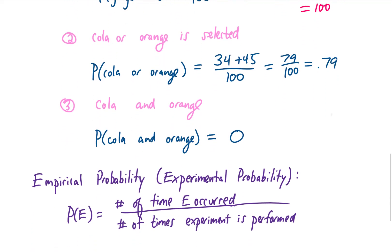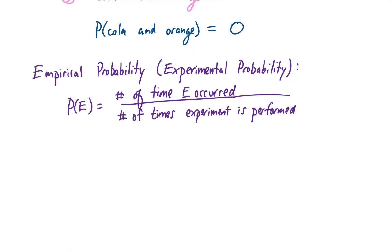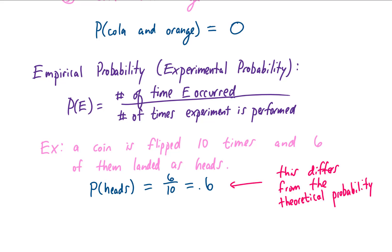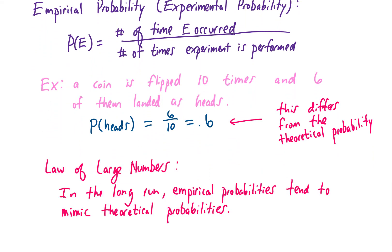Because we next want to talk about empirical probabilities. Empirical probabilities we can just think of as experimental probabilities. We actually run an experiment and ask the question, what is the probability of some event happening? An example here might be a coin is actually flipped 10 times, and maybe six of them landed as heads. In this experiment, the probability that the coin lands as heads is six heads out of ten possible coin flips, or 0.6. And you'll notice that this differs from our theoretical probability. And that's totally okay, that's going to happen sometimes. We only flipped this coin ten times, which is a pretty small number of coin flips.